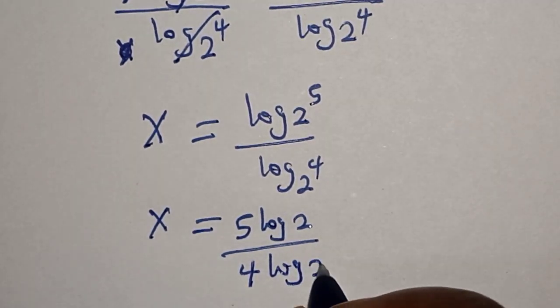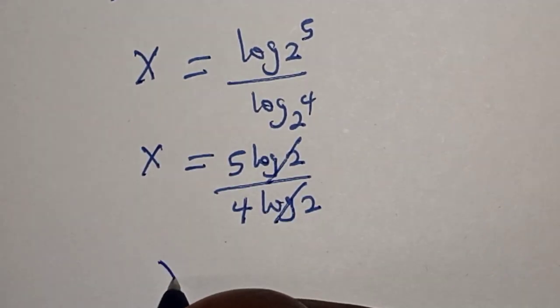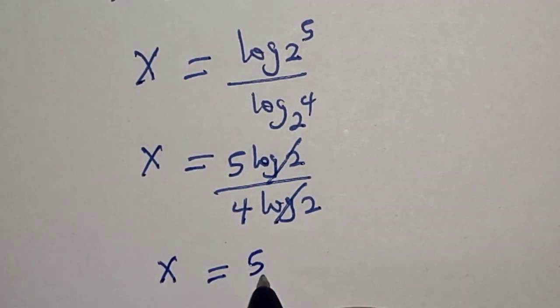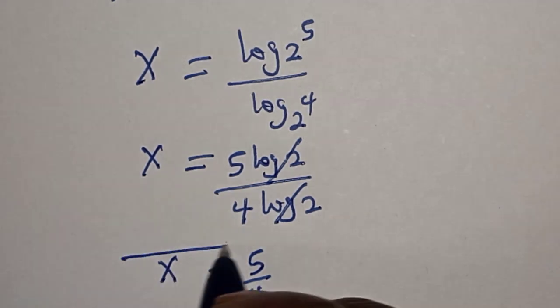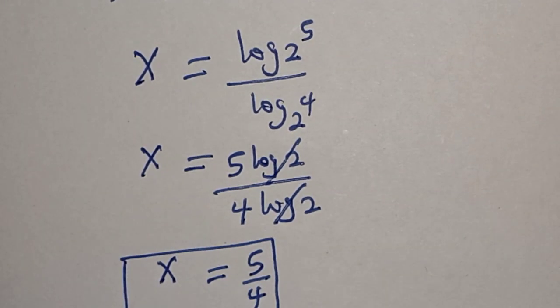This will cancel, so x is equal to 5 over 4. And that is our final answer.